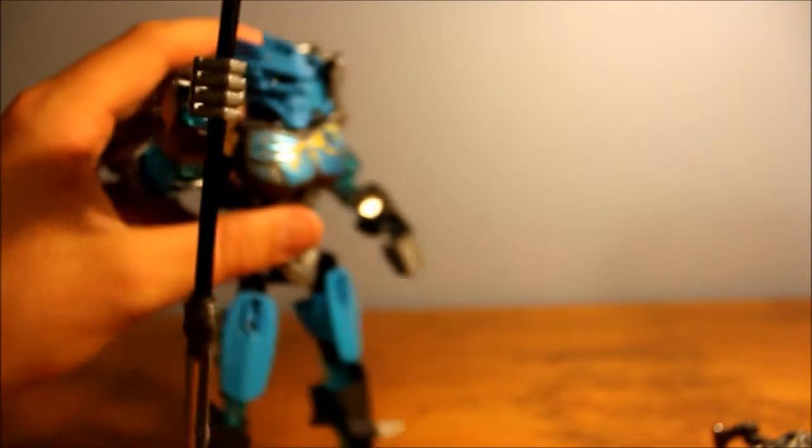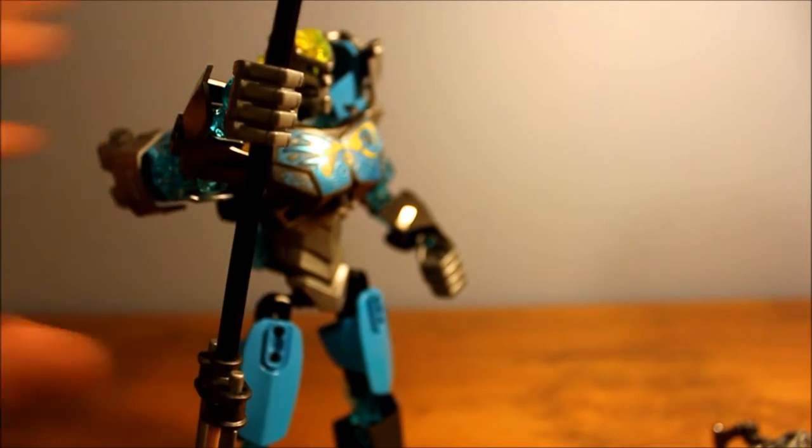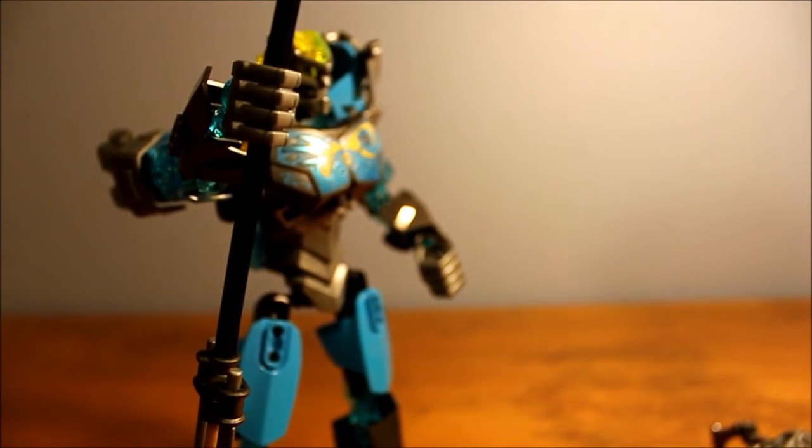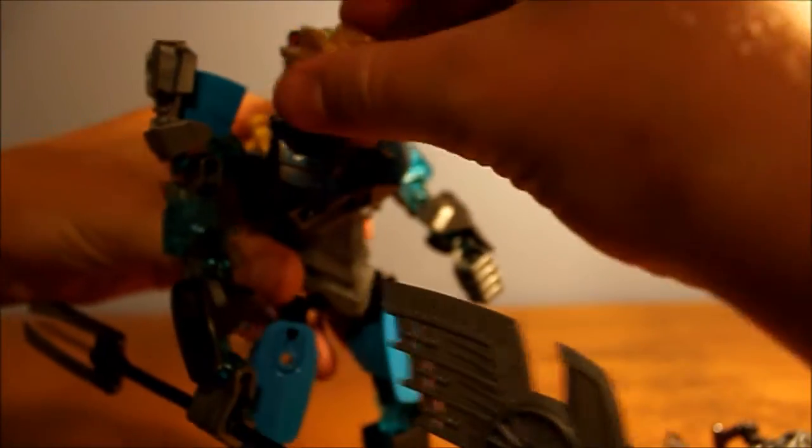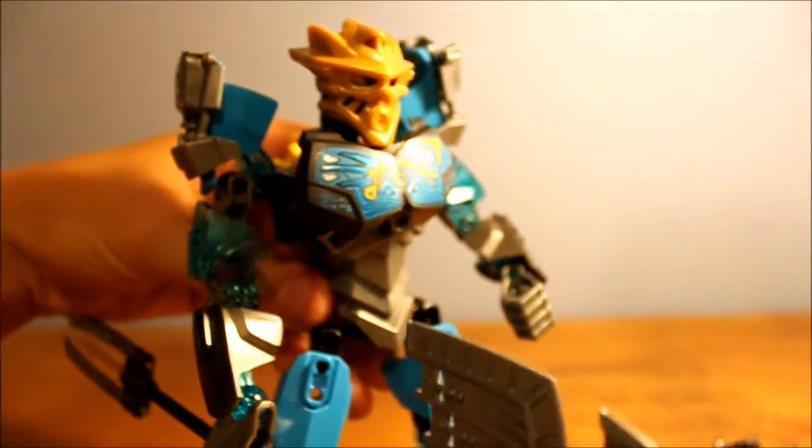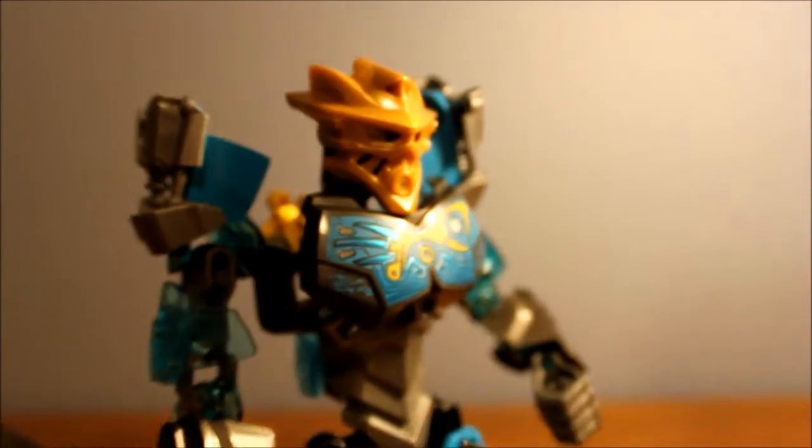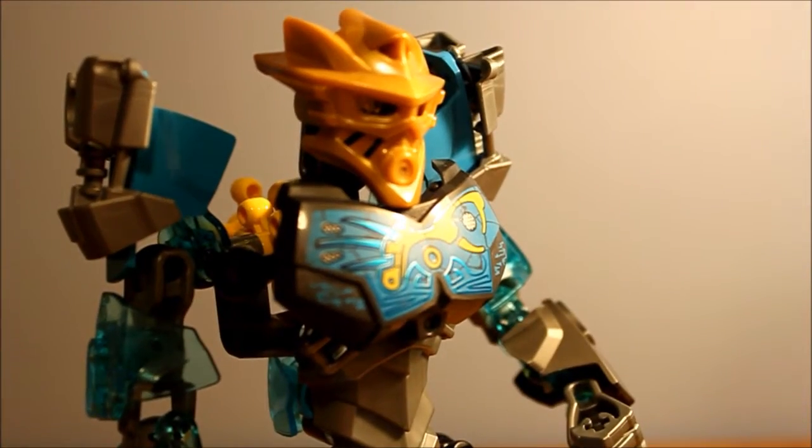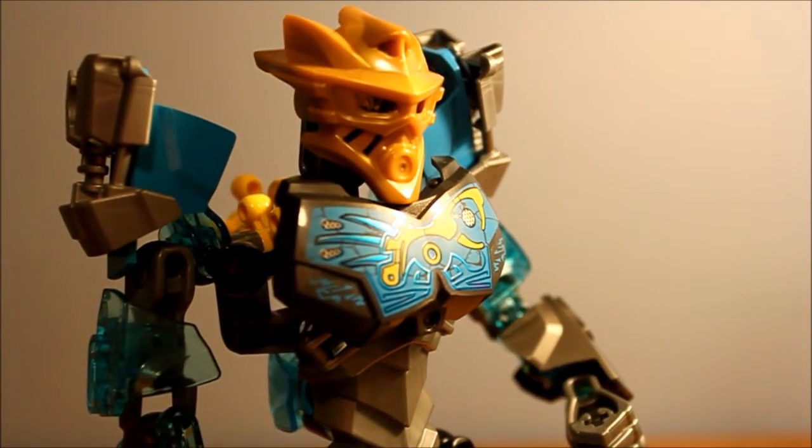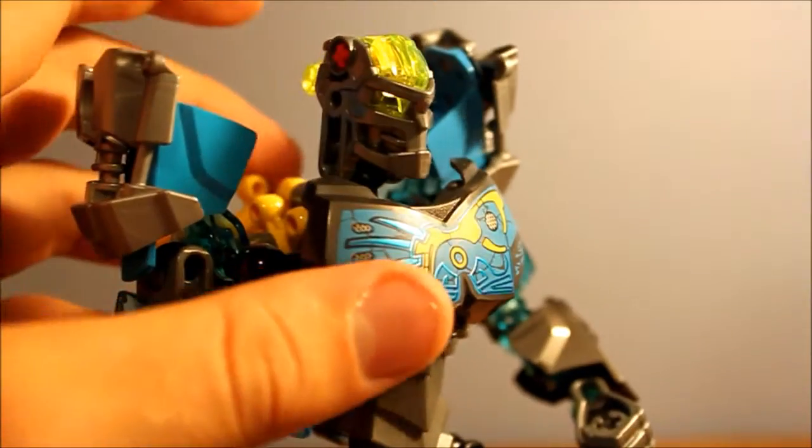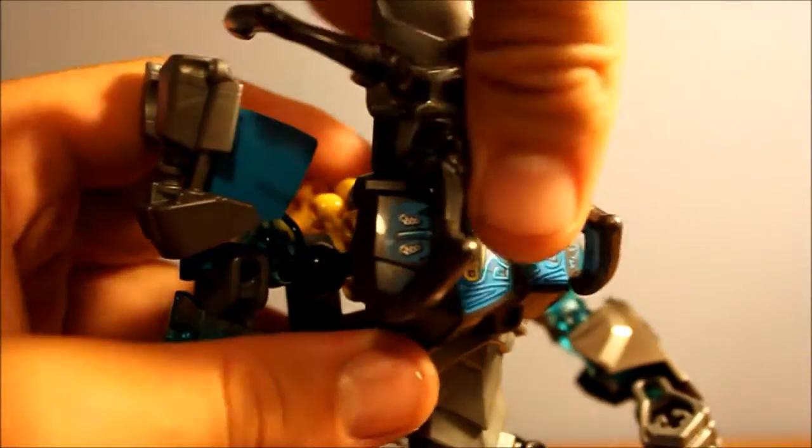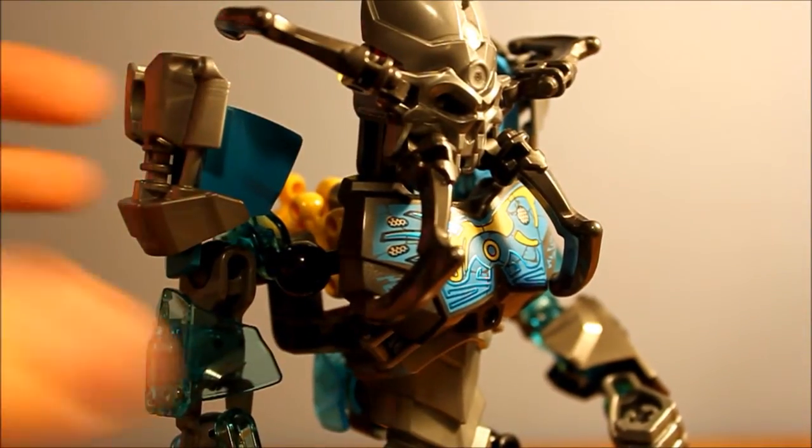Gali also has the mask pop-off feature. Push the brain stock. And her mask falls off and onto my floor. Get the weapon out of the way. And she also comes with her golden mask. Which I said is a nice touch. Because you always had to hunt for them in blind box mask packs. And the Skull Spider can attach to her face too. And take control of her mind.